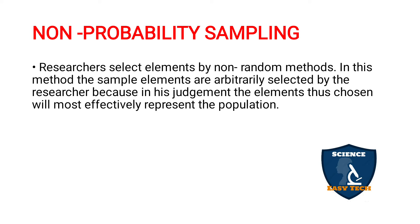Non-probability sampling techniques — here the researcher selects elements by non-random methods. The sample elements are arbitrarily selected by the researcher because in his judgment the elements chosen will most effectively represent the population. In probability, each and every sample has an equal chance, but in non-probability, according to the researcher's convenience and need, he can choose the subjects. For example, in a class if I want to select 30 samples, whomever I consider convenient I can take, whereas in probability I would use a lottery method so all students have an equal chance.